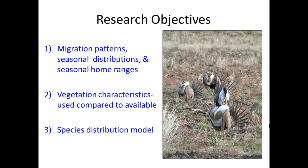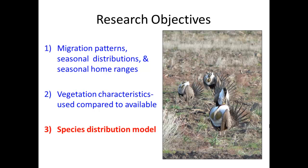My thesis objectives are: first, to determine what the migration patterns, seasonal distributions, and seasonal home ranges are for this population. This population has never previously been studied, so it's important to get some baseline information before proceeding. The next step is to determine vegetation characteristics of what the birds are using and what habitat characteristics are available in the study area. Finally, what I'll be talking about today is a species distribution model for this population.